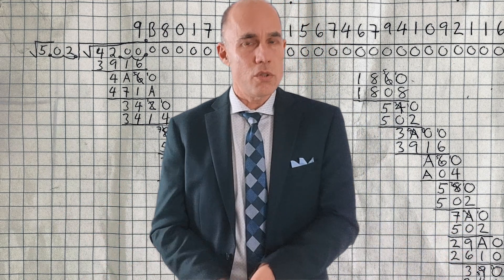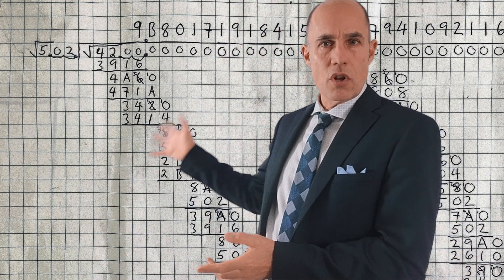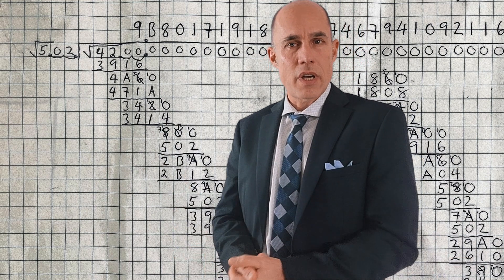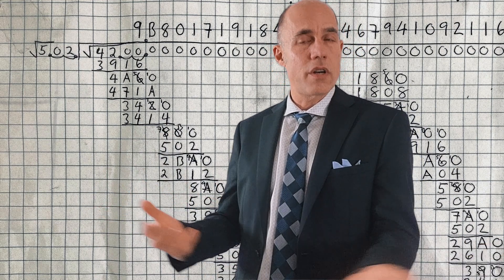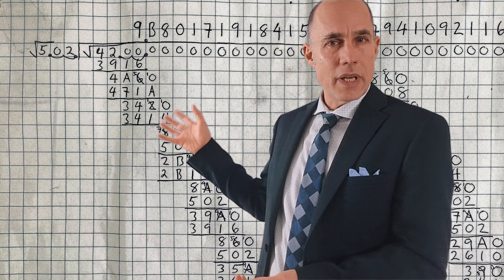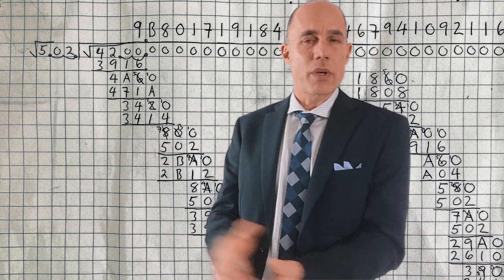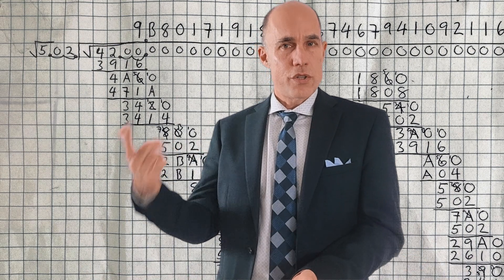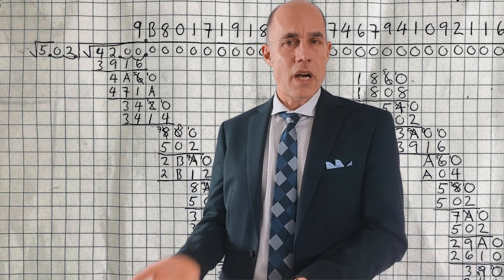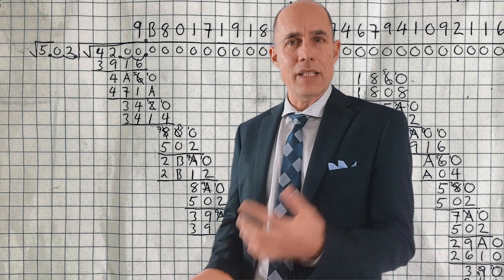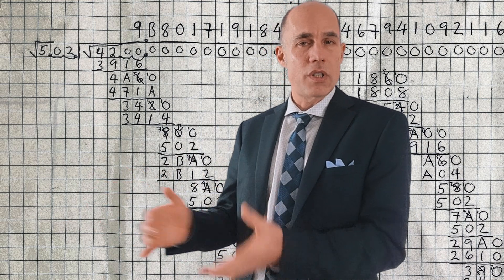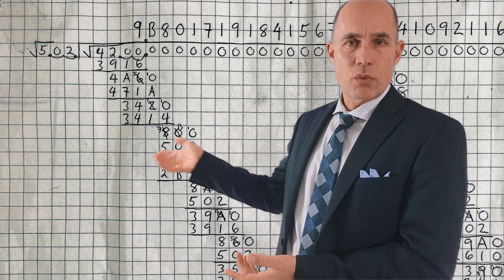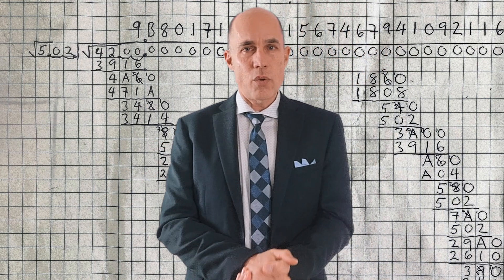Using long division the result starts with 9 — since 3 squared is 9. The answer works out to 9.b8017191... In base 12 we have extra numerals: 1, 2, 3, 4, 5, 6, 7, 8, 9, A, B, 10 — so A's and B's appear within the overall number. That gives us the base 12 version of pi as 9.b8017191.